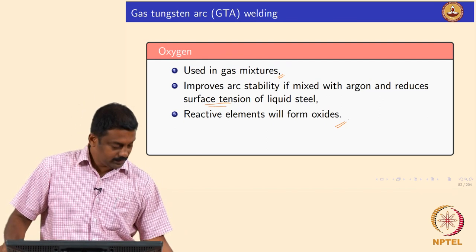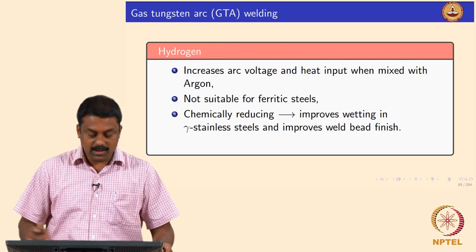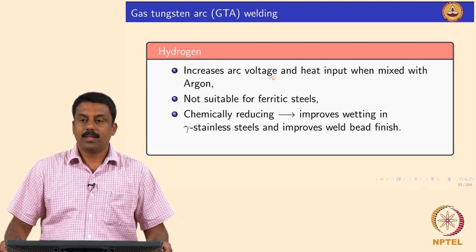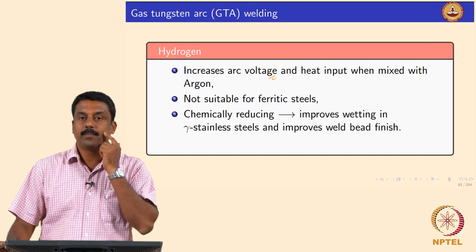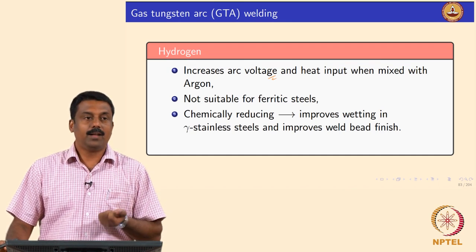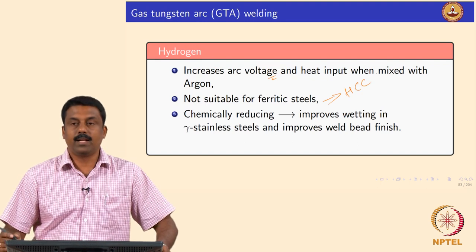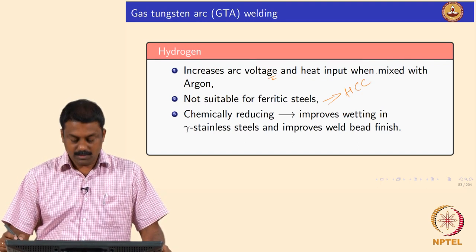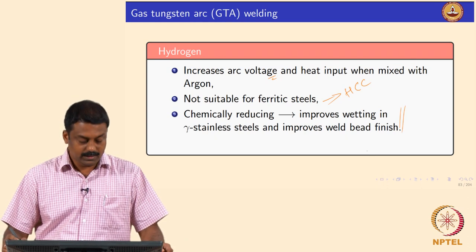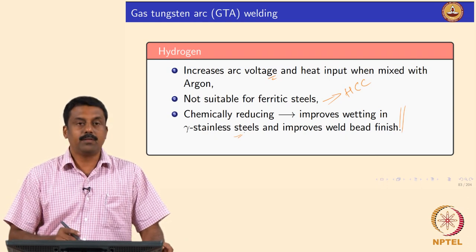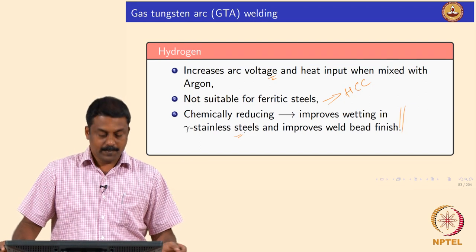Hydrogen is also known to increase the arc voltage — again because of its convective nature — and known to increase heat input because the energy released is also very high. It is not suitable for ferritic steels for the same reasons already explained: hydrogen cracking, cold cracking, or hydrogen embrittlement. In some cases it improves wetability because it also affects the surface tension and viscosity. Hydrogen is widely used for spreading the weld pool effectively for austenitic stainless steels.